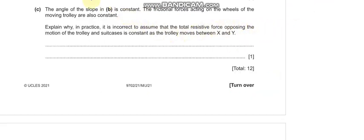Part C: the angle of the slope and the frictional forces on the wheels are constant. Explain why in practice it is incorrect to assume the total resistive force is constant as the trolley moves between X and Y. That is because of uncontrolled variables — as the speed increases down the slope, the air resistance increases.